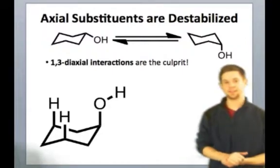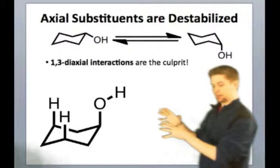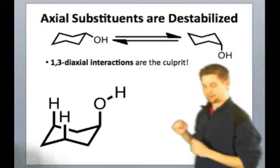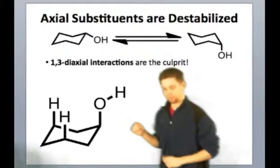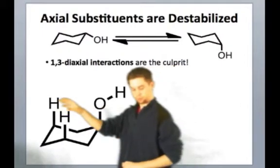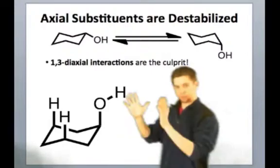So we see on this slide that axial substituents are destabilized. And this diagram will hopefully help give you an idea of why. So in looking at a substituent that's axial, we see that it's got two other axial substituents only two carbons away, and they're pointing up directly at it.